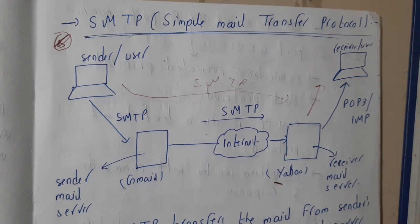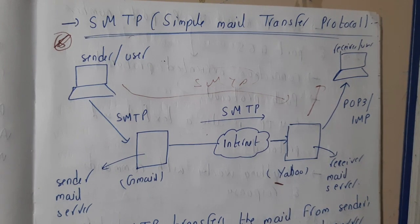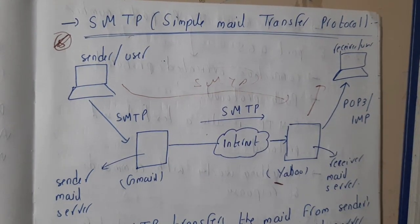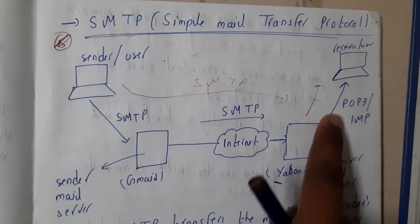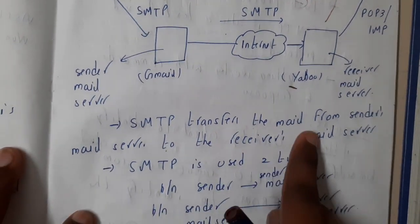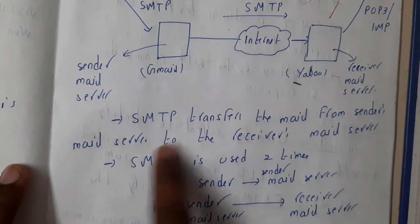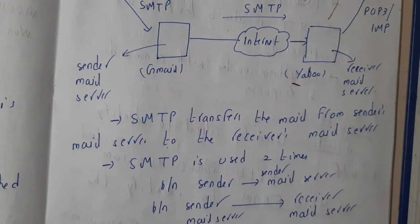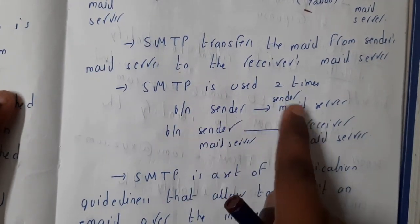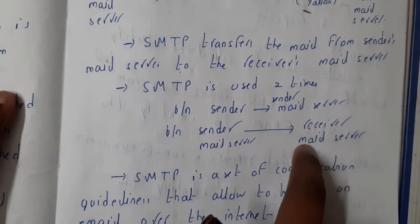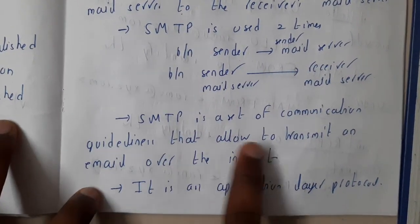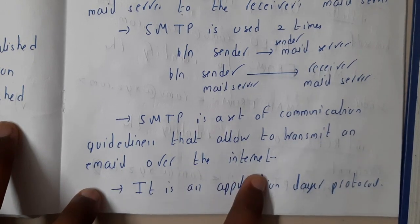Once the mail reaches the receiver's mail server, POP3 or IMAP protocols are used to collect the mail from the server. We will discuss those in the next lecture. SMTP is used twice: from sender to sender's mail server, and from sender's mail server to receiver's mail server.